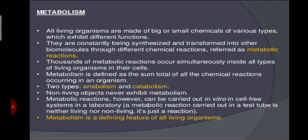Metabolism occurs in all unicellular and multicellular organisms. Its two stages are: anabolism — the process of building up or synthesizing complex substances from simpler ones, for example photosynthesis; and catabolism — the process of breakdown of complex substances into simpler substances, for example respiration, releasing waste outside. Metabolic reactions cannot be demonstrated outside the body, hence metabolism can be considered a defining feature of all living organisms without exception. No non-living objects exhibit metabolism.